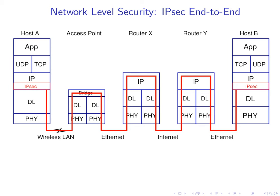IPsec is the most general of the three solutions, and it can be end-to-end. The problem is it often involves the end user on both hosts — host A and host B — doing some manual configuration to set up the security parameters so they can communicate. This makes it not very convenient for many common applications, so it's not widely used in that mode. We also looked at Wi-Fi encryption.